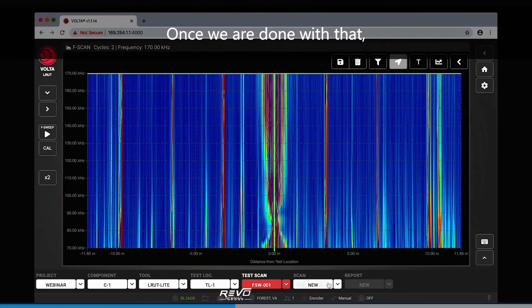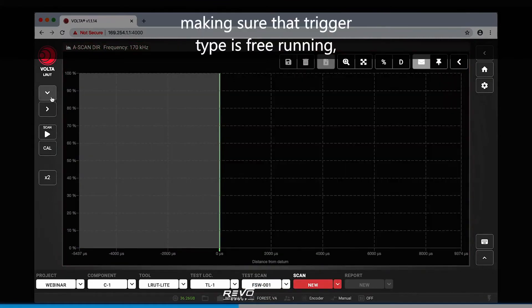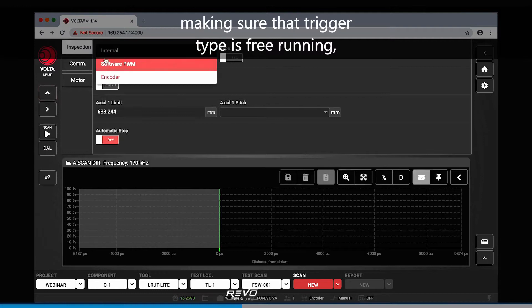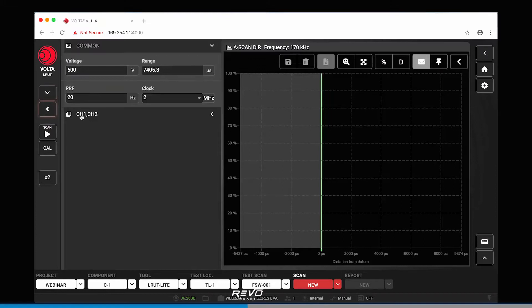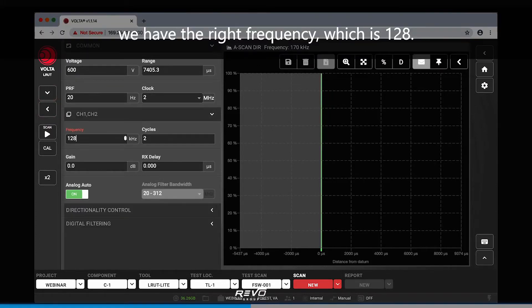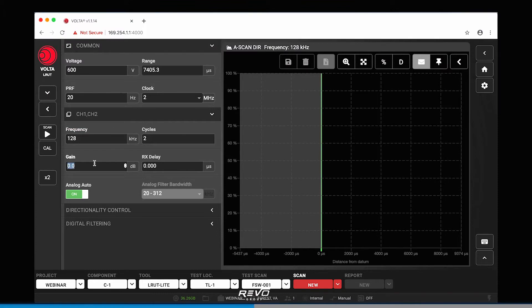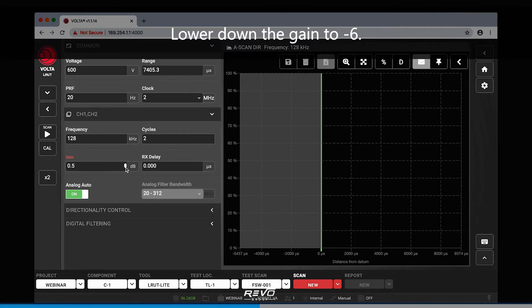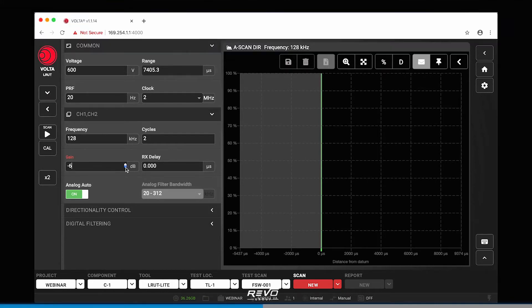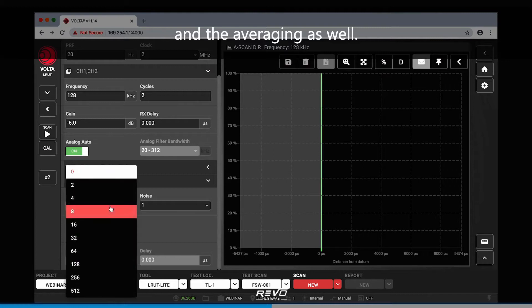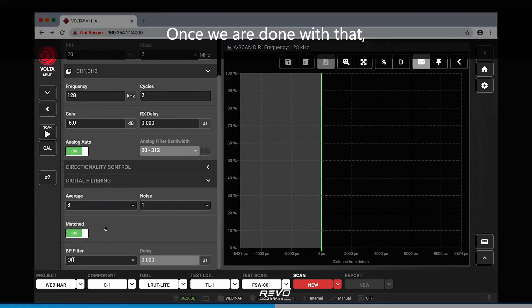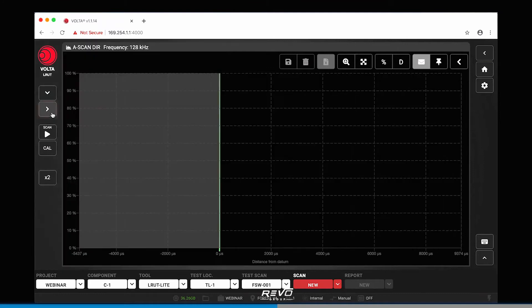Once we are done with that, we move on to scan, making sure that trigger type is free running, and that we have the right frequency, which is 128. Lower down the gain to minus 6, turn on the match filter, and the averaging as well. Once we are done with that, we can run the scan.